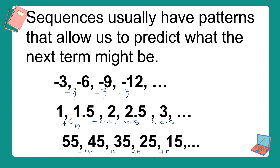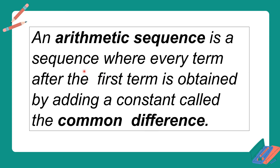Ano nga ba ang arithmetic sequence? Arithmetic sequence is a sequence where every term after the first term is obtained by adding a constant called the common difference. So, sa past examples natin, yung ating usually ina-add o sinusubtract na certain number or constant number ay ang tinatawag nating common difference. Kapag may common difference ang isang sequence, siya ay tinatawag na arithmetic sequence.